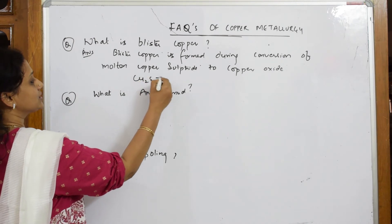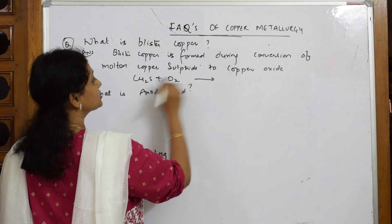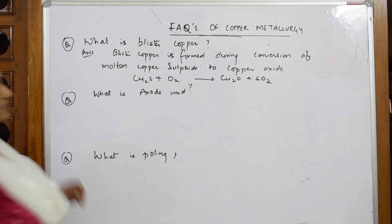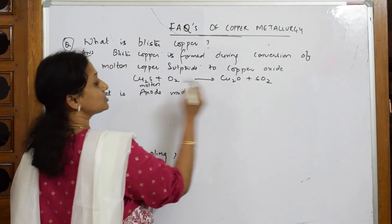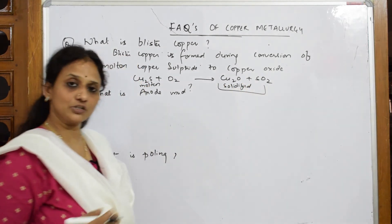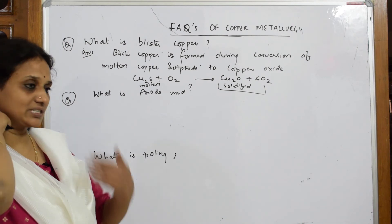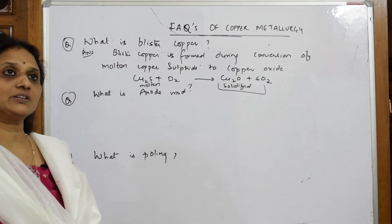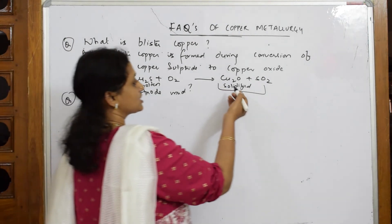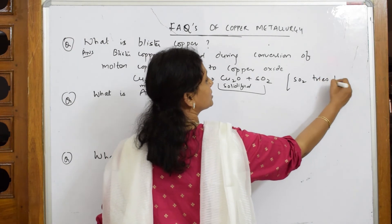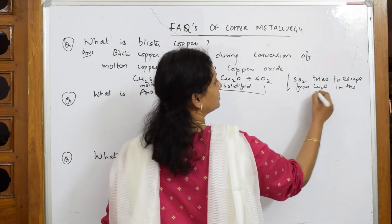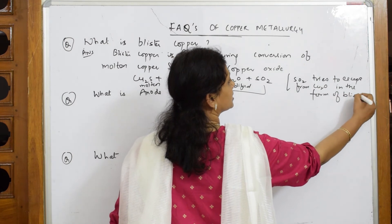In the Bessemer converter, Cu₂S combines with oxygen to form copper oxide plus sulfur dioxide. This copper oxide is in molten form. When we try to solidify it, sulfur dioxide tries to escape from the copper metal in the form of blisters or bubbles on the solidifying copper surface. That is why we call it blister copper.